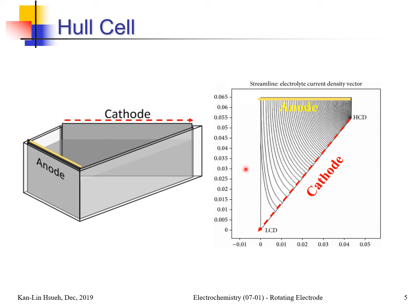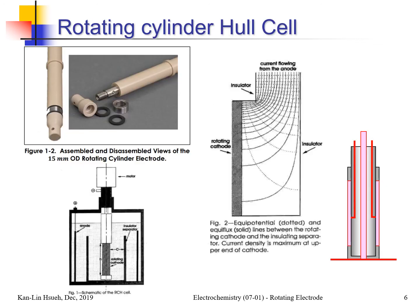In one experiment you can see the deposit at different current densities and find the range that gives the best deposit. But the problem is that the mass transfer rate cannot be controlled — you put a magnetic stir bar in the middle, but depending on its size, location, and rotation speed, the mass transfer rate is always unequal, and the experiment is not really reproducible between different operators.